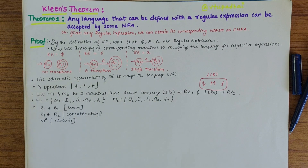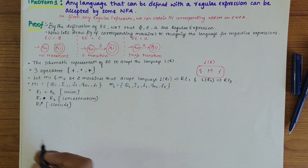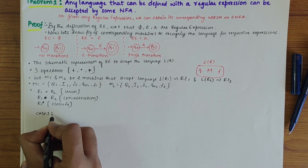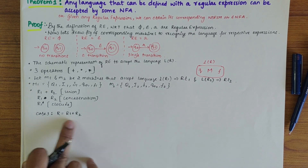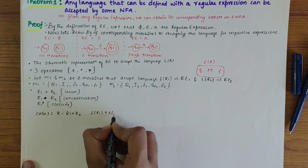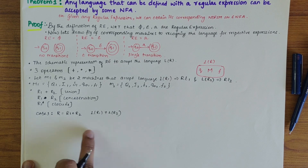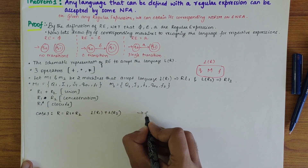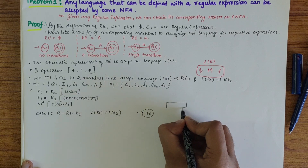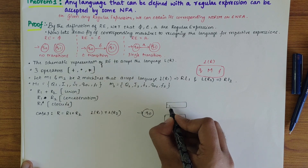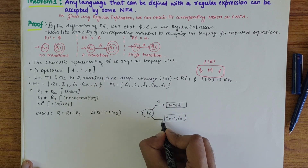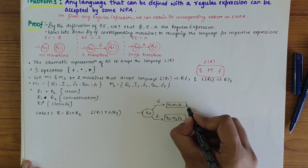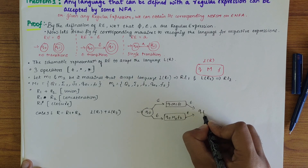Our aim is to prove that any regular expression can be accepted by some NFA. Case 1: R = R1 + R2. An Epsilon-NFA can be constructed to accept the language L(R1) ∪ L(R2). There is a new start state with Epsilon transitions leading to machine M1 (Q1, F1) and machine M2 (Q2, F2), and Epsilon transitions from both final states to a new single final state.